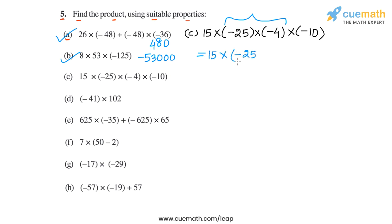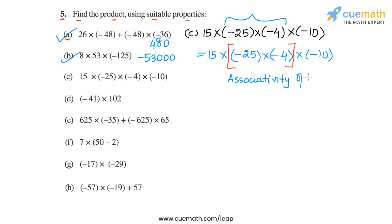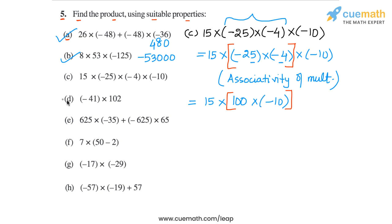So we calculate minus 25 into minus 4 first, which equals 100 — magnitude 100, sign positive. Then we have 15 into 100 into minus 10; we calculate 100 into minus 10 first to get minus 1000. Finally, 15 into minus 1000 equals minus 15,000. So in part C, the answer is minus 15,000.